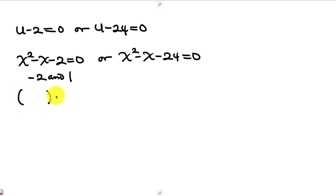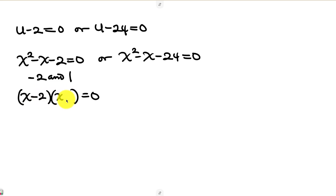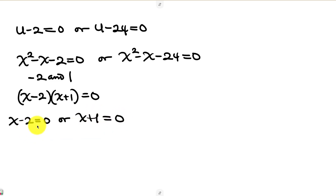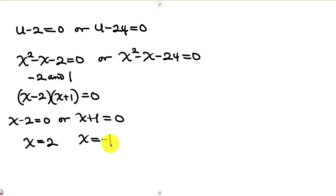So we form (x − 2)(x + 1) = 0. This gives x − 2 = 0 or x + 1 = 0. From the first, x = 2. From the second, x = −1. We now have two values of x from this case.